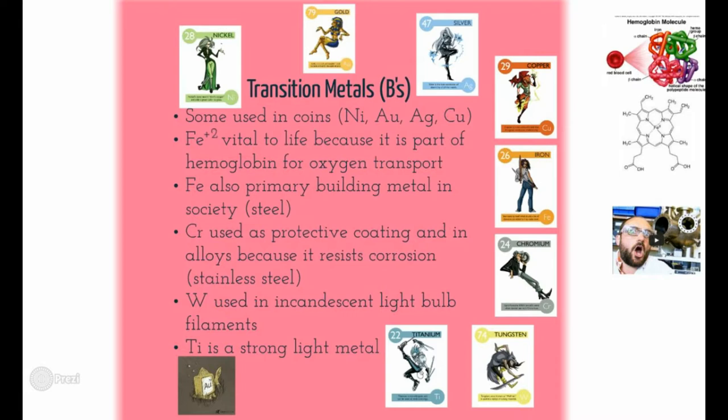Titanium is a very strong, light metal. We used to make space shuttles out of it because it's a metal that's strong and light — hence the name titanium, named after the Titans. That's the main thing to know about transition metals.